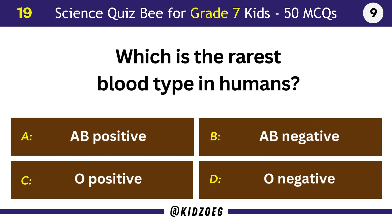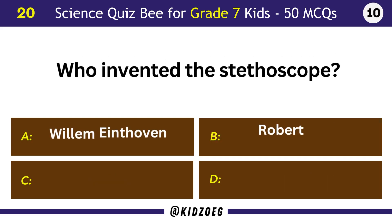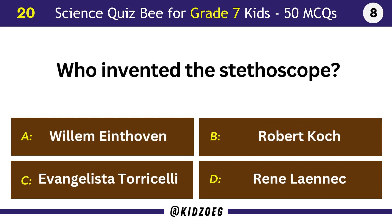Which is the rarest blood type in humans? AB Negative. Who invented the stethoscope? René Laennec.